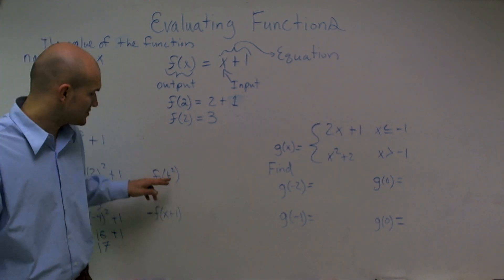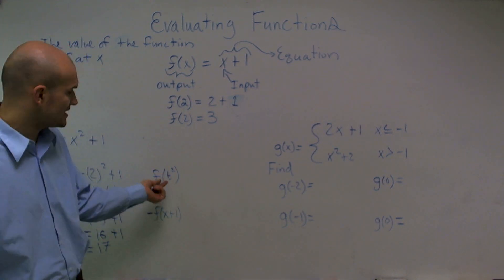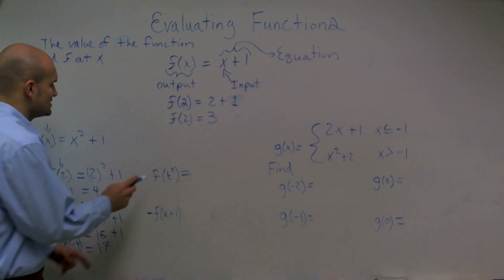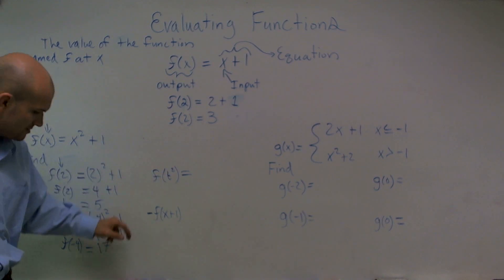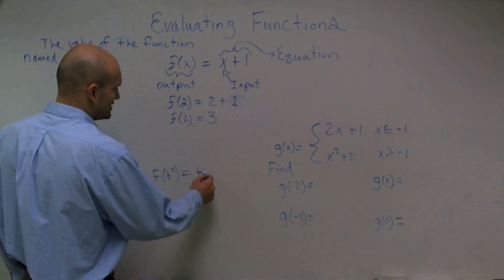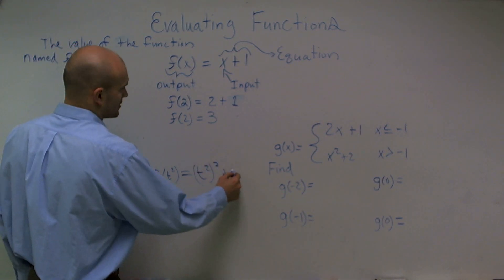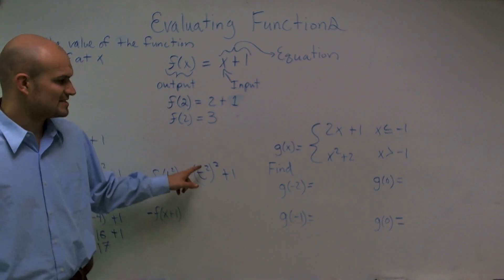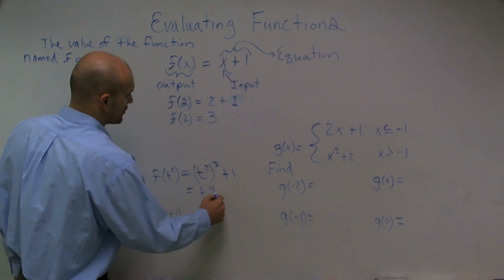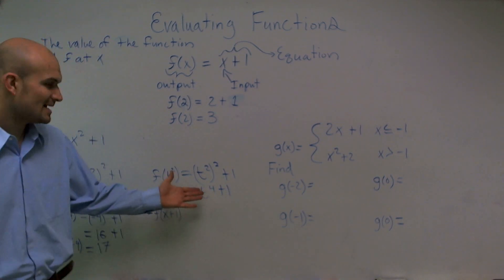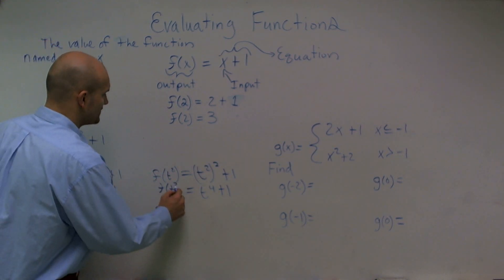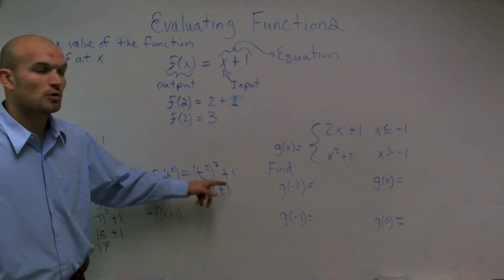Now let's say my input value is going to be t squared — that means I want to plug in t squared for my input. Wherever you see your variable, that is where you're going to plug in t squared. So I'll have t squared, squared, plus 1. Whenever we take an exponent to an exponent, you multiply the exponents. So this gives me t to the fourth plus 1. The value of my function f at t squared is equal to t to the fourth plus 1.